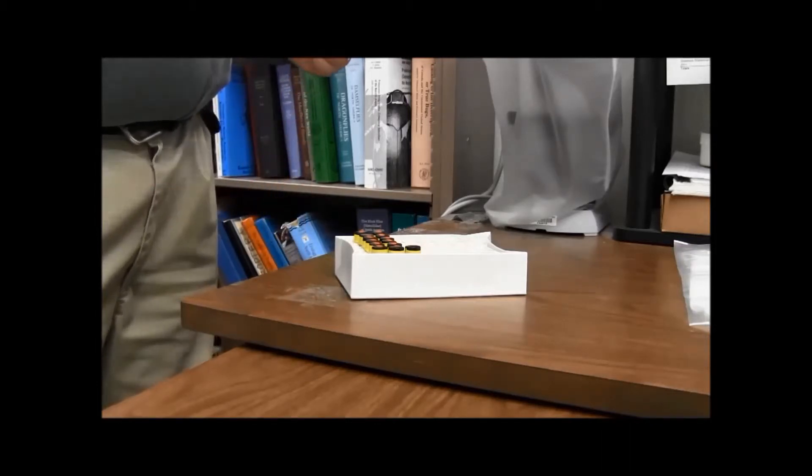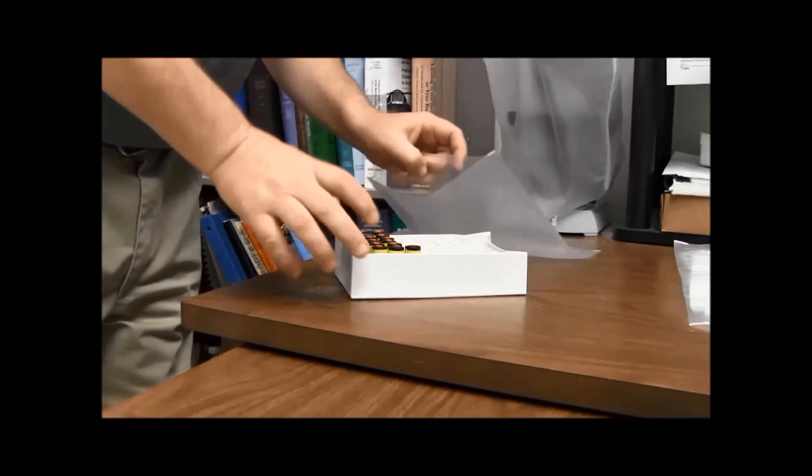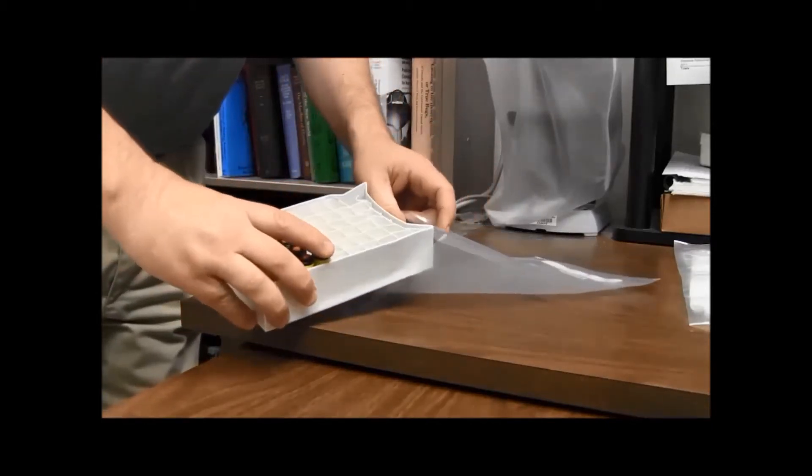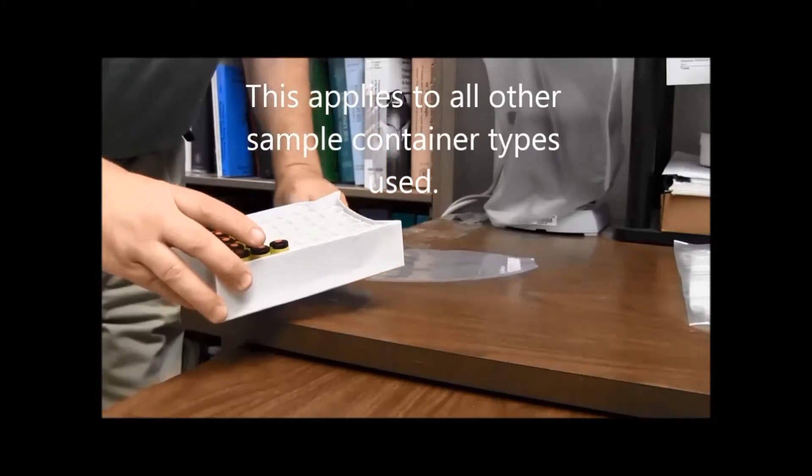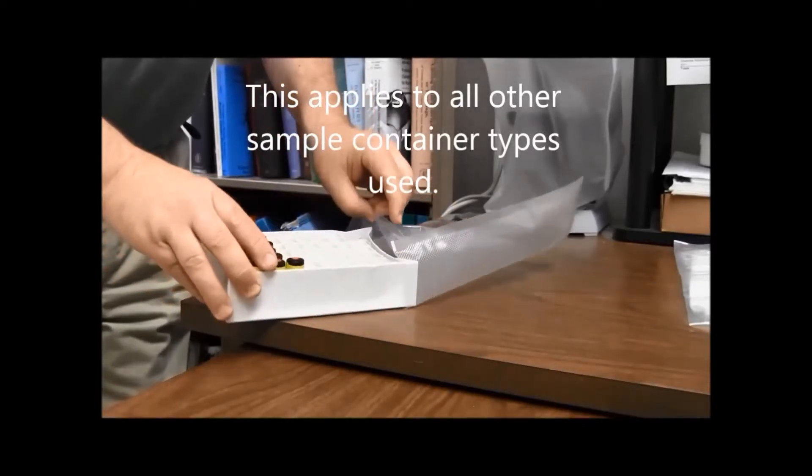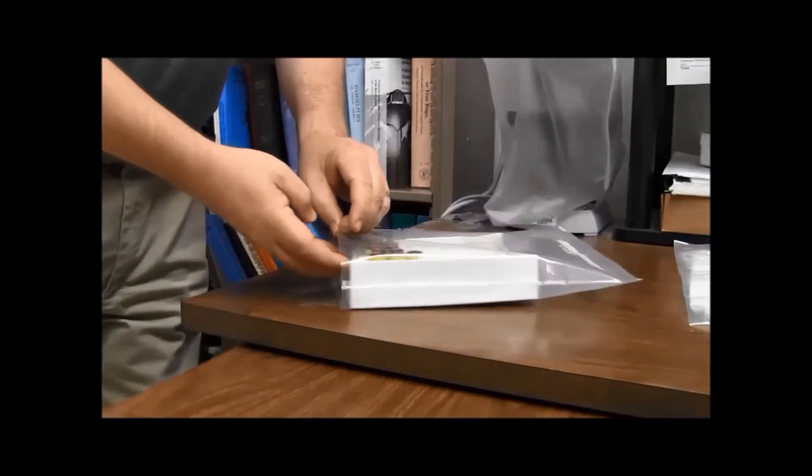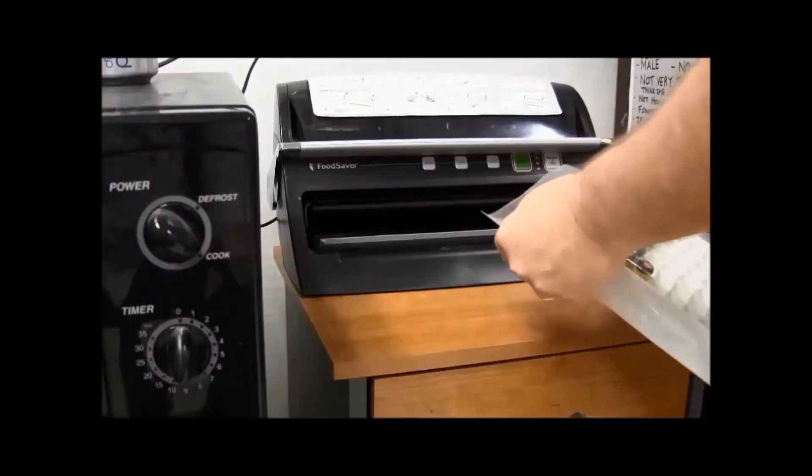First step is you are supposed to heat seal your vials so you can put them in the vial tray or there are other ways of binding vials together. We found this is a nice convenient way of doing it. So this is the machine we use.